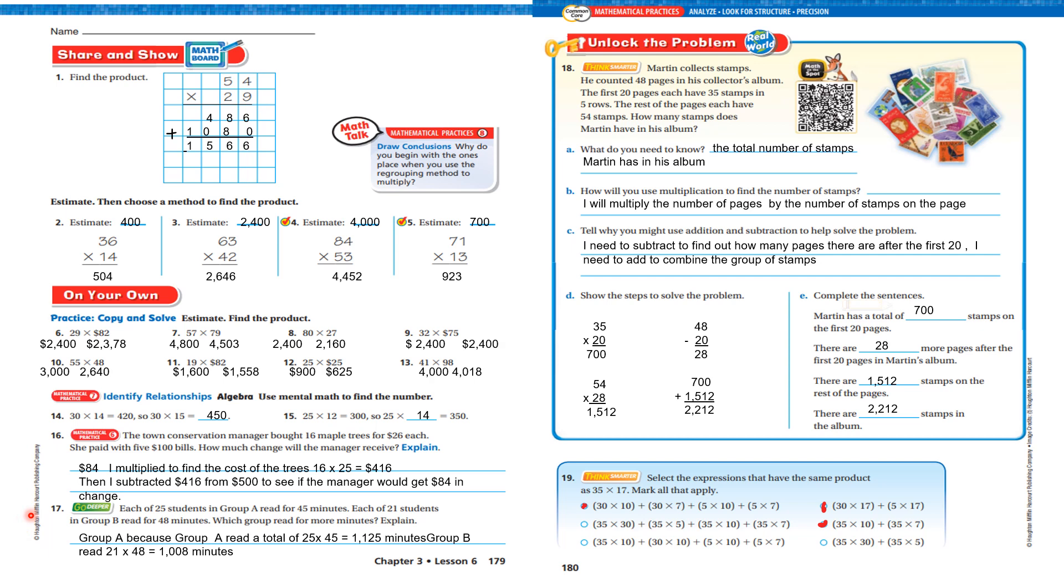Number 17. Each of 25 students in group A read for 45 minutes. Each of 21 students in group B read for 48 minutes. Which group read more minutes? Group A, because group A read a total of 25 times 45, which equals 1,125 minutes. And group B read 21 times 48, which equals 1,008 minutes.